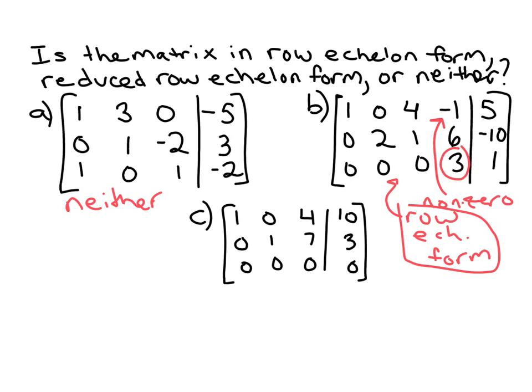So the only two pivots in this matrix do move down and to the right, so it's in row echelon form. And further, yeah, it's in reduced row echelon form because each of these pivots are the only non-zero entry in that column.